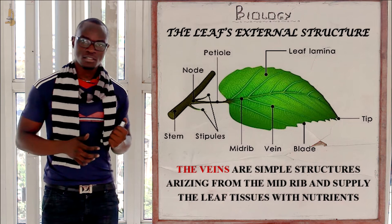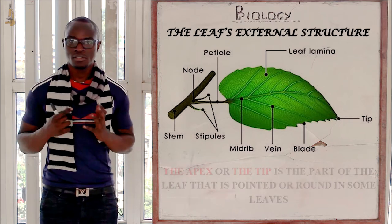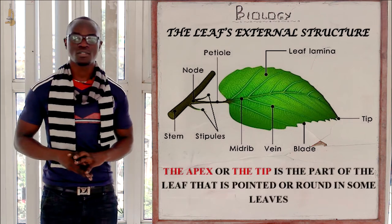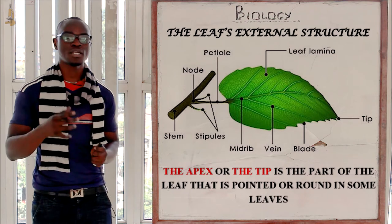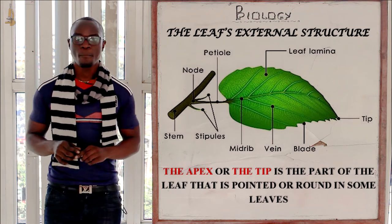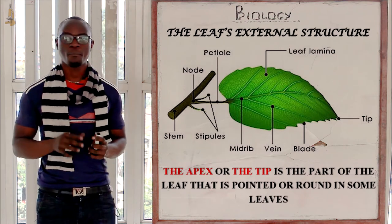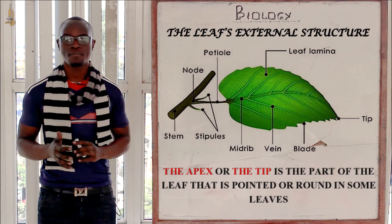Next let's look at the apex. The apex is the part of the leaf where it is mostly pointed — the pointed tip of the leaf.